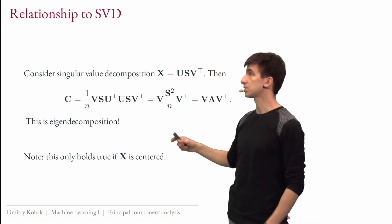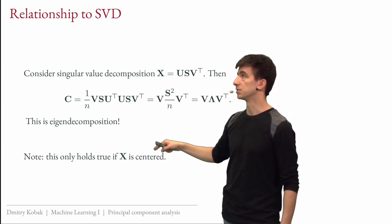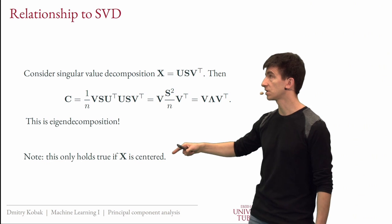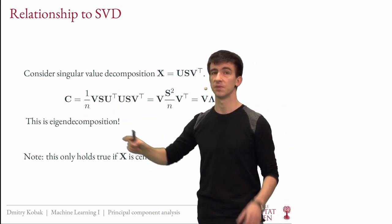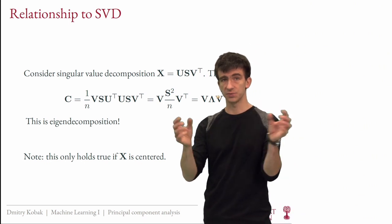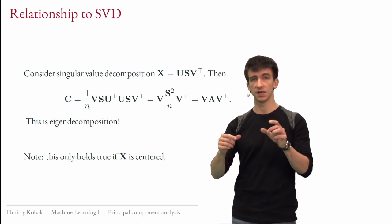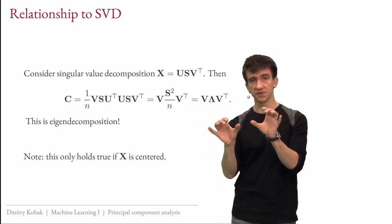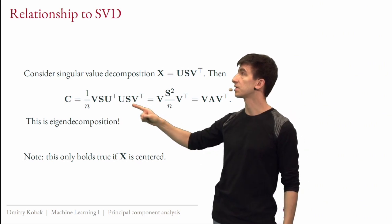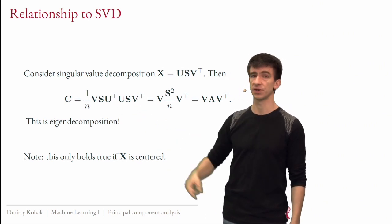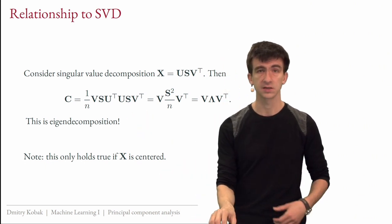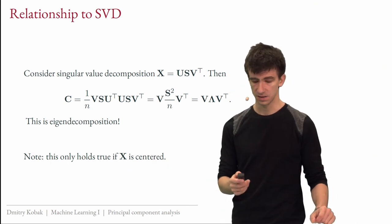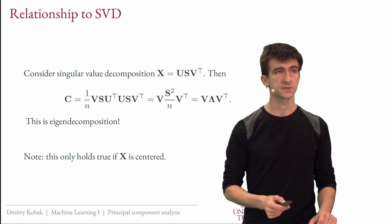This holds as long as x is centered — all features have mean zero. If not, xᵀx/n is not the covariance matrix, since covariance requires subtracting the mean. When the mean is zero there's nothing to subtract, and we can write it directly. As with regression problems, it's convenient to first center the x matrix.